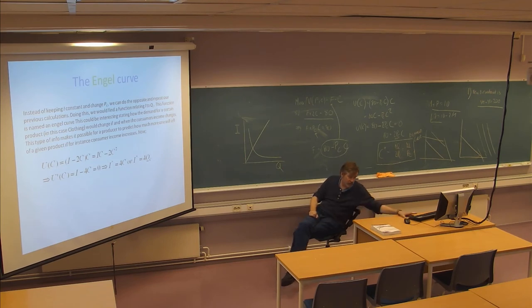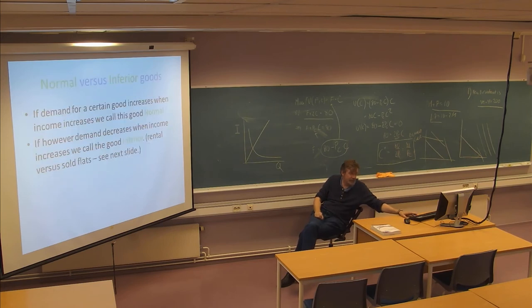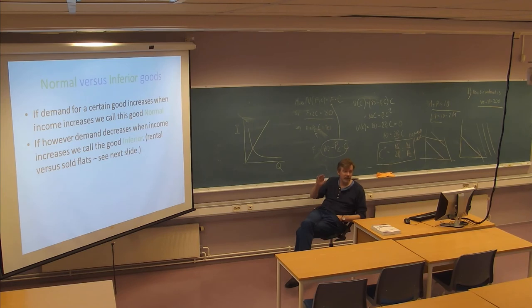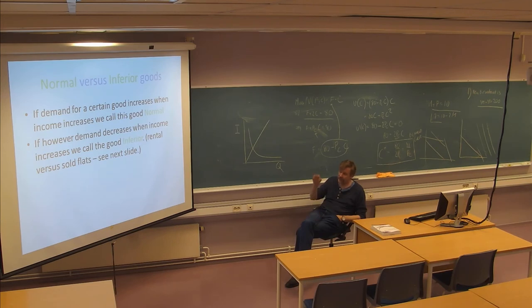Now, these Engel curves have led to another concept called normal versus inferior goods. If demand for a certain good increases when income increases, that's the typical thing - people get more money and start buying more of everything. This good is called a normal good. If, however, the amount decreases when income increases - meaning that people get more money but buy less of these products - we call the good inferior.